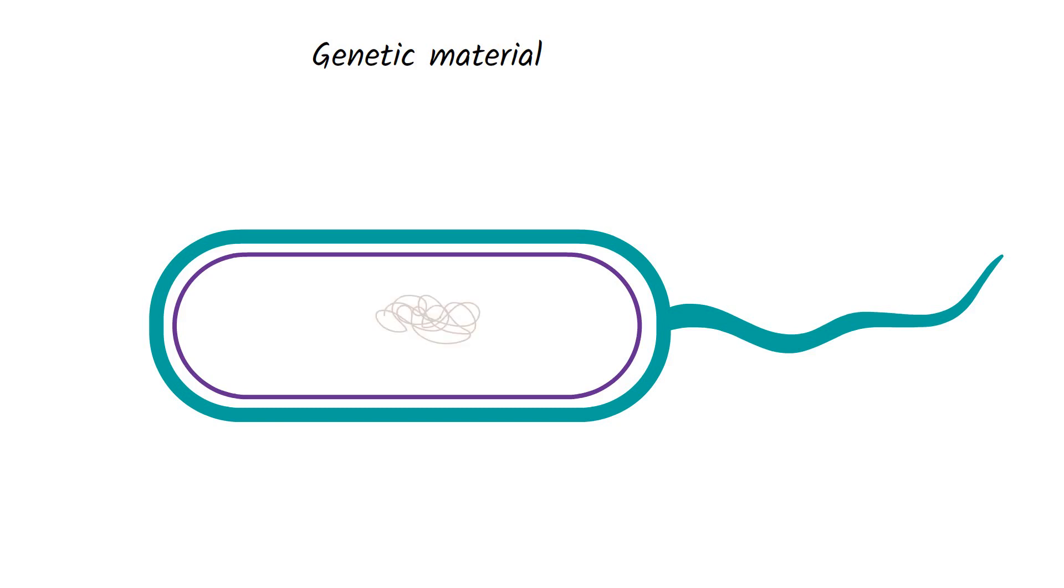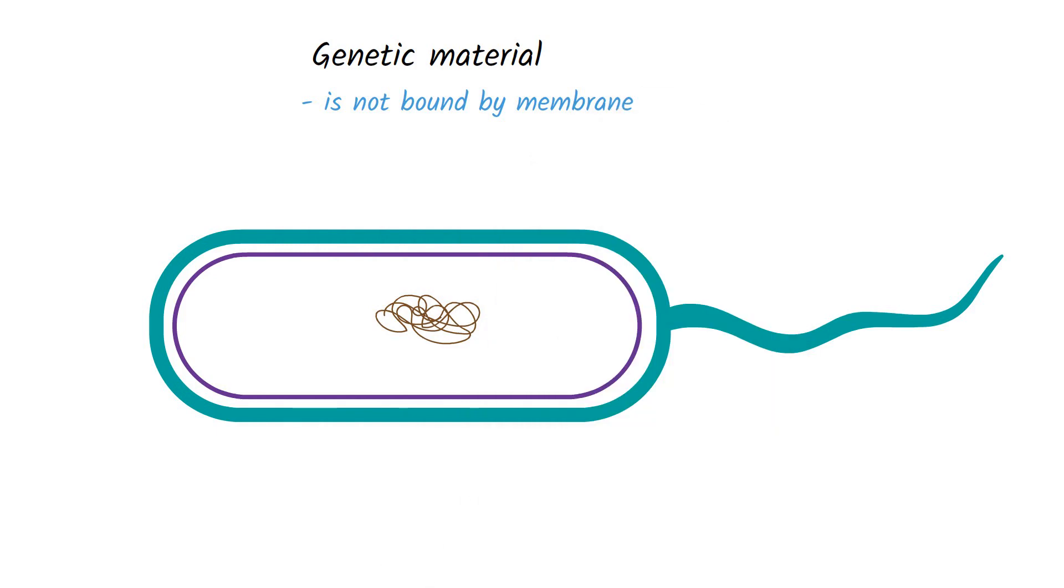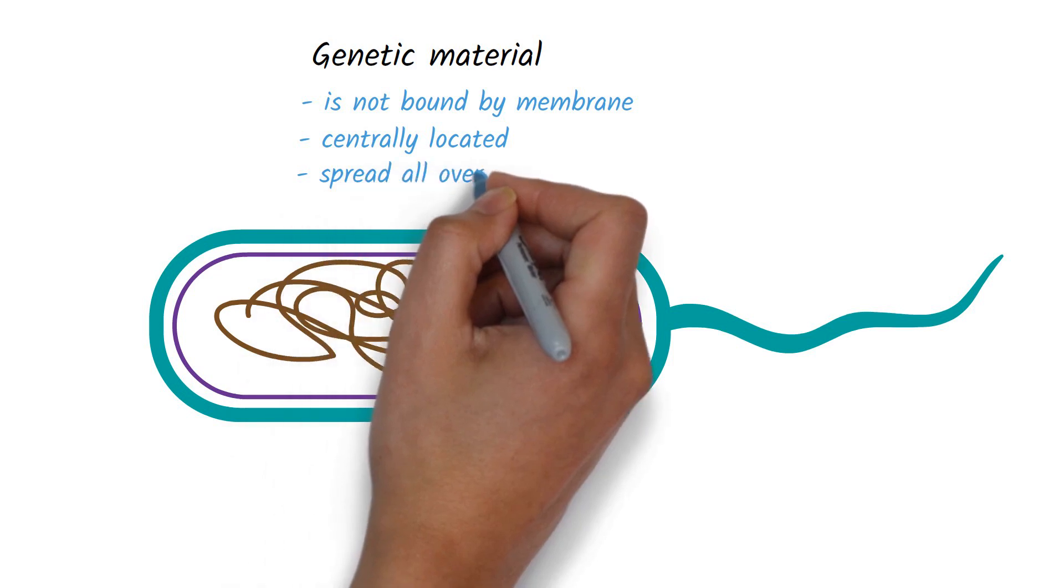Unlike the eukaryotes, the genetic material in the bacterial cell is not bound by membrane. The genetic material in a bacterial cell is either centrally located or spread all over the cell.